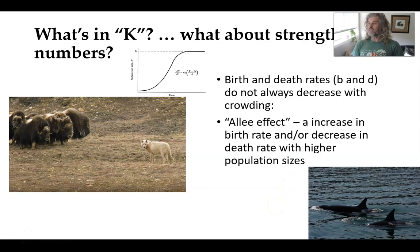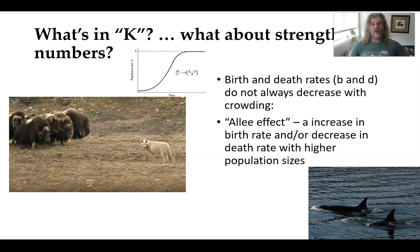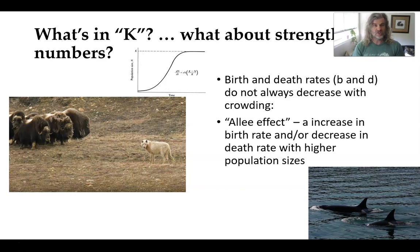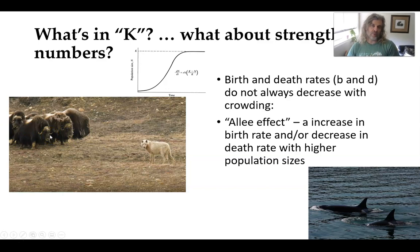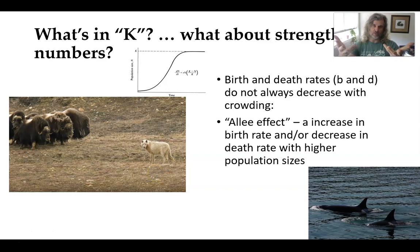Allee effects are an interesting thing that happen in any population. This is essentially strength in numbers, where birth rates may be increased when populations are larger, or likewise death rates may be decreased when populations are larger. Some of the best examples happen in predator-prey systems. Muskox have positive Allee effects, as do some marine mammals. By having a larger group, they're better able to defend themselves against predators like wolves, for example.